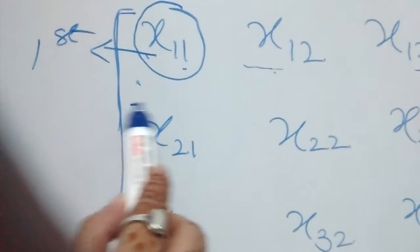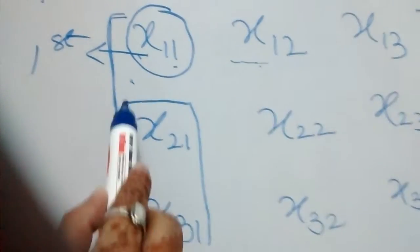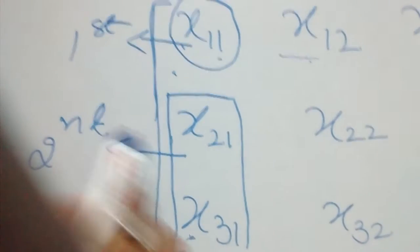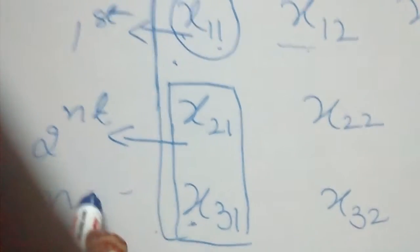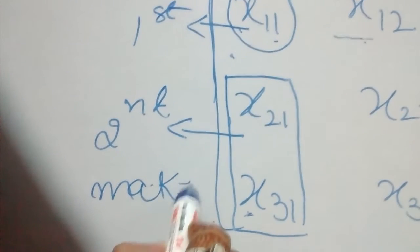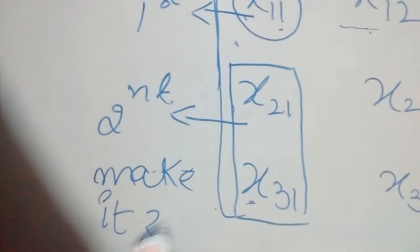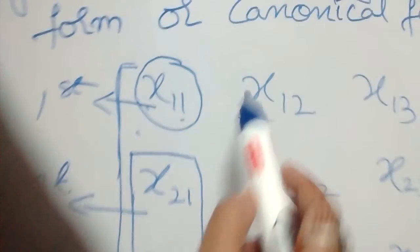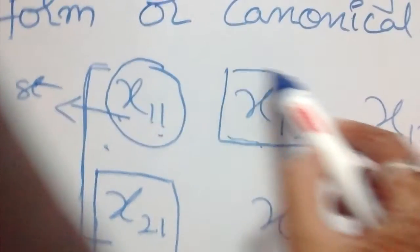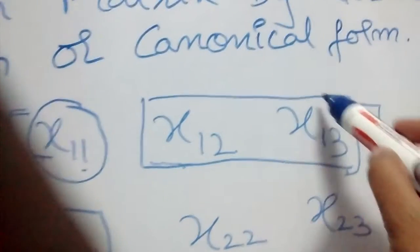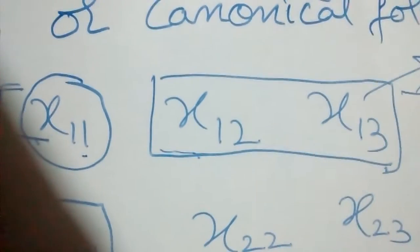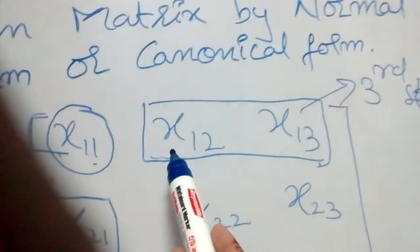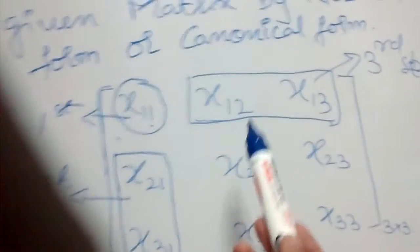The second step: after making the first element 1, make the two elements below it as zeros by using row operations. The third step: once we have made those two elements zero using row operations, make the two elements to the right of the first pivot as zeros by using column operations.